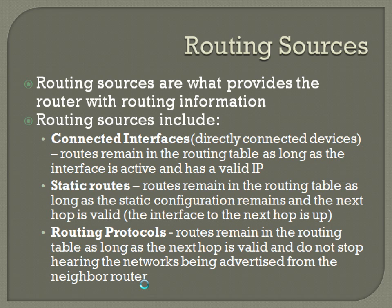Routing sources are what provides the router with routing information. Routing sources include connected interfaces — directly connected devices — where routes remain in the routing table as long as the interface is active and has a valid IP. Static routes remain in the routing table as long as the static configuration remains and the next hop is valid, meaning that interface is still up. And then routing protocols, which we'll get into in the next few chapters — routes remain in the routing table as long as the next hop is valid and you do not stop hearing the networks being advertised from the neighbor router.